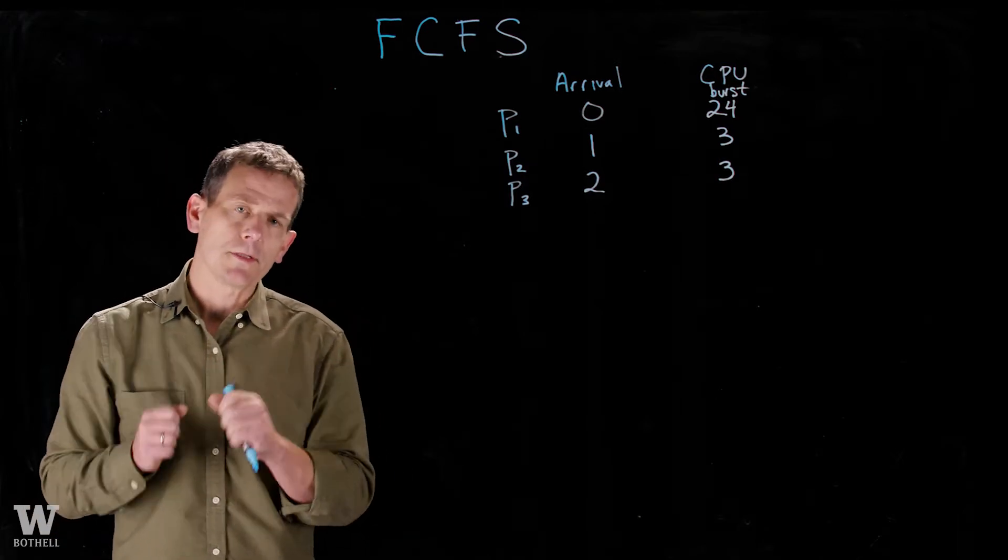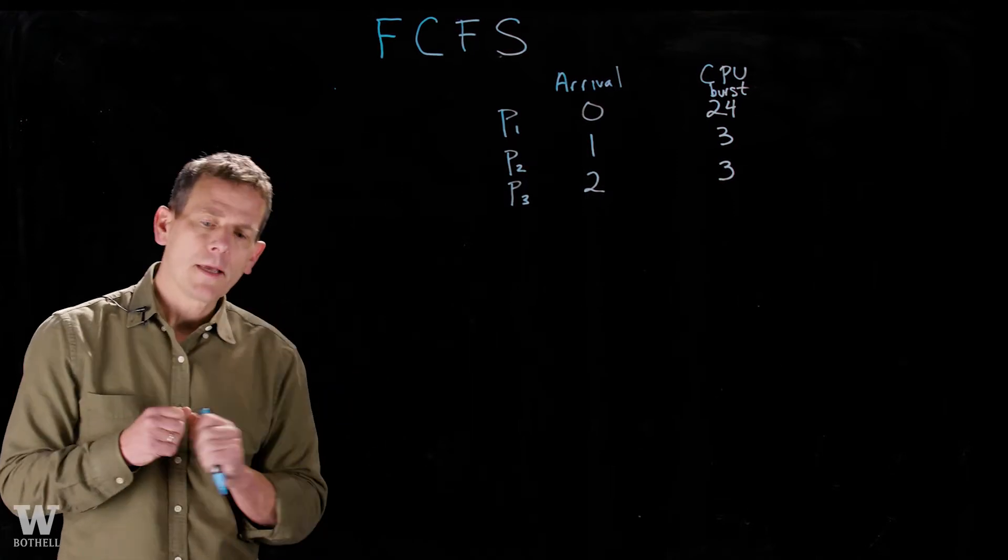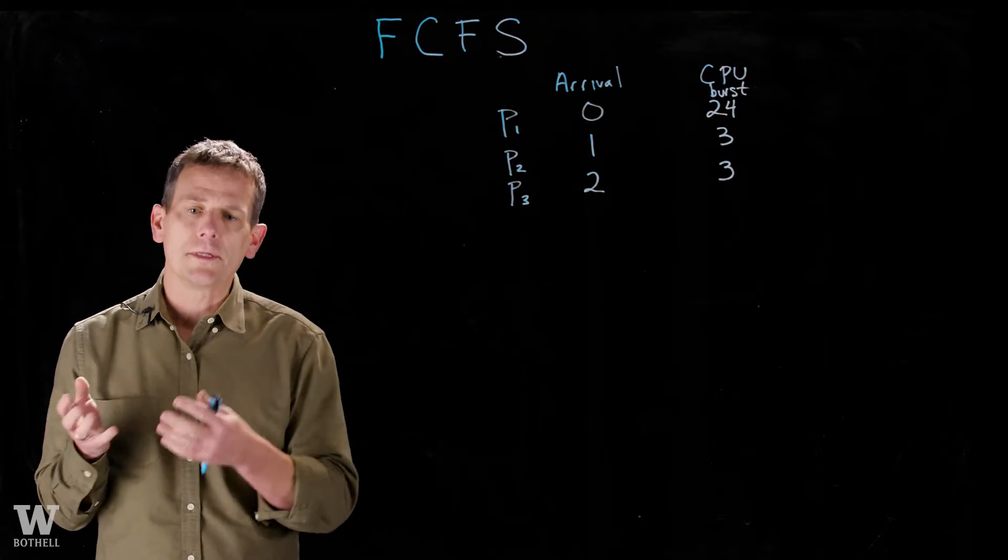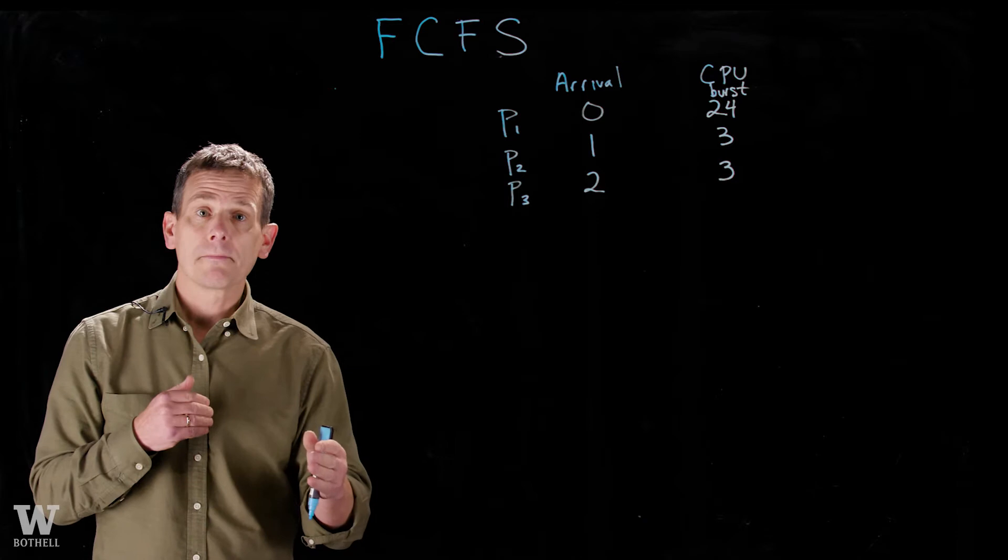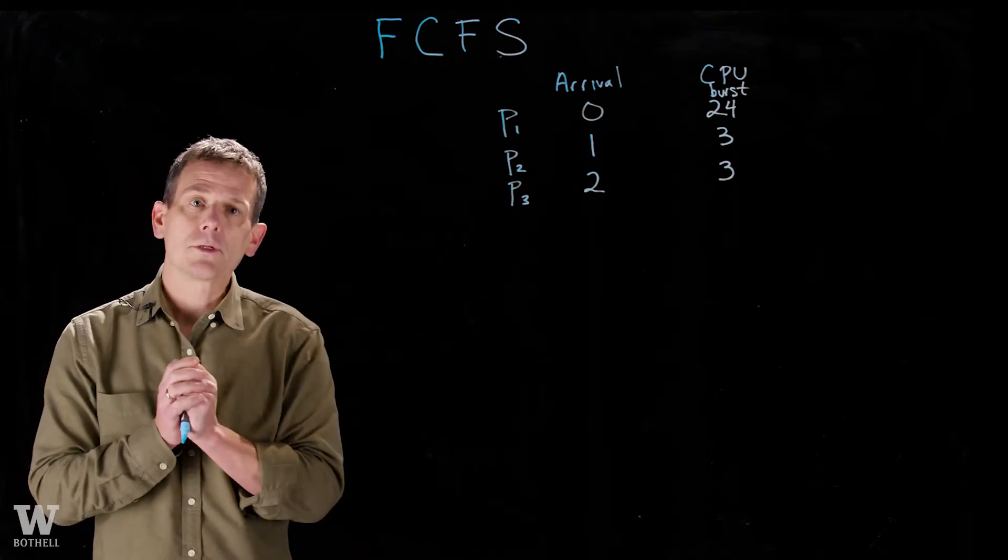To switch between these threads, a context switch happens. So a thread will be running along, and one of two things will happen. Either it will require an I/O, need to go to the disk possibly, or a network call, and so it will block. And then the scheduler will run, and it will decide amongst the other threads which thread should run.